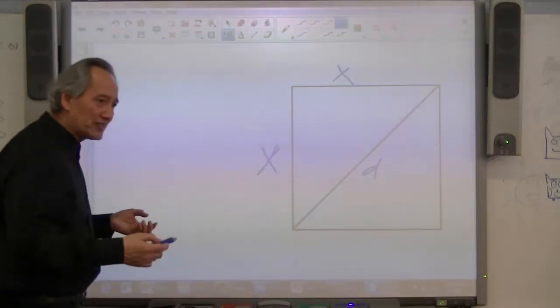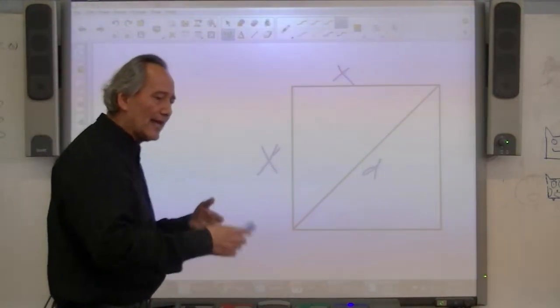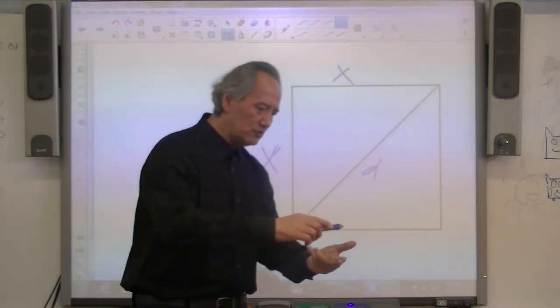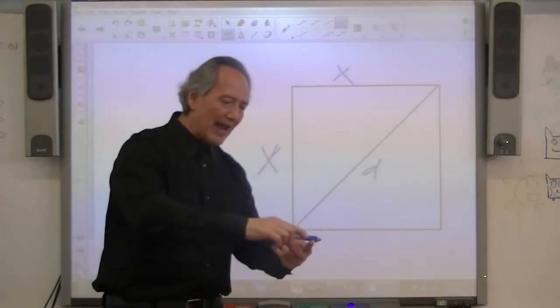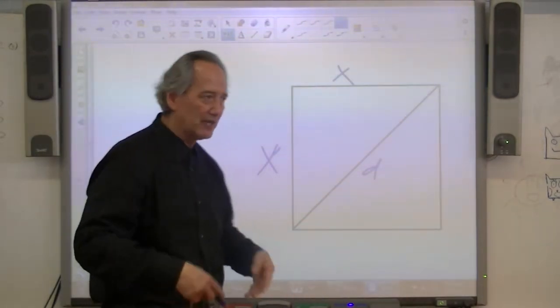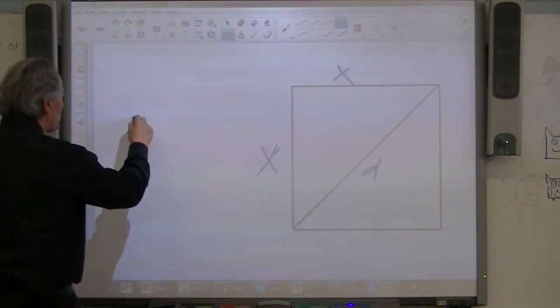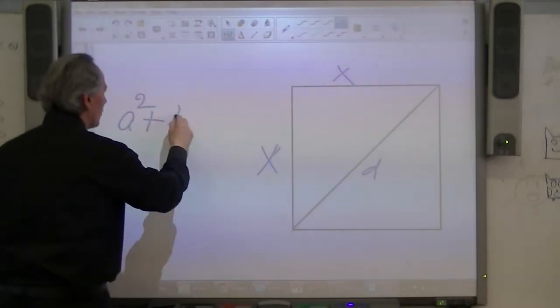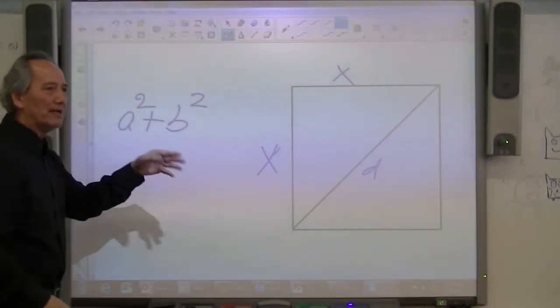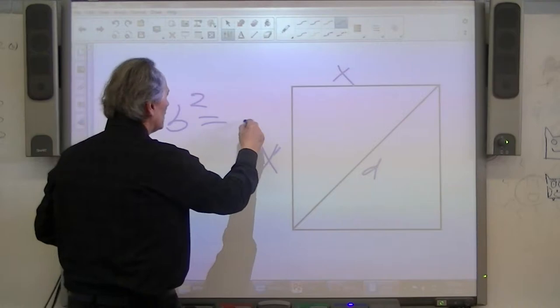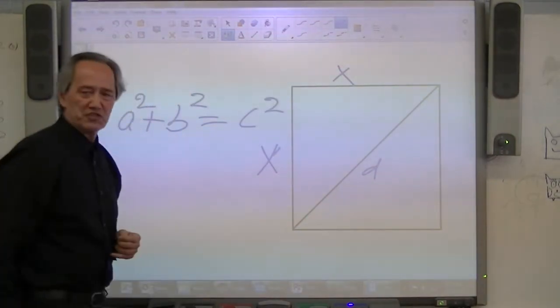Pythagorean theorem states this, with letters that represent the two legs and the hypotenuse A, B, and C respectively. The Pythagorean theorem states that the square of one of the sides plus the square of the other side, A and B being two sides, is equal to the square of the hypotenuse or C.